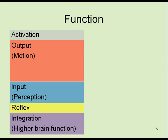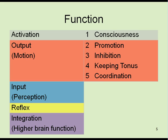Brain has ten functions in five categories. Consciousness as activation. Promotion, inhibition, keeping tonus, and coordination as output or motion.